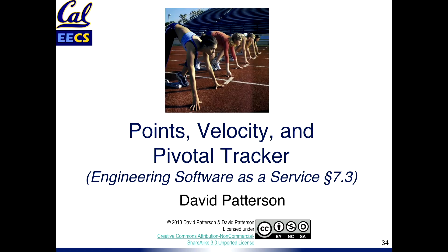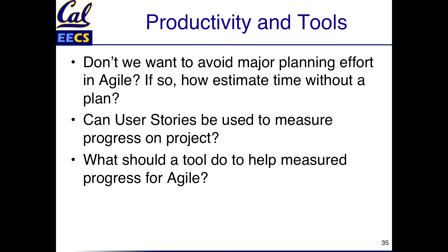The next step in behavior-driven design: how are we going to keep track of our projects? This seems like an oxymoron. Agile is this loosey-goosey soft development with informal and scrum teams. How are we going to plan this in Agile? How are we going to estimate time if there's no plan? Can we use user stories, and if so, what tool would we use?